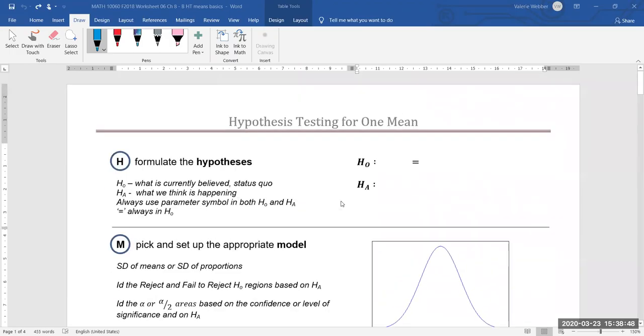So let's highlight a few major important points. When we have one mean we have to remember that our parameter symbol is mu and mu is going to have to show up in each hypothesis. The null is what we currently believe or what we currently accept and the alternative is what we think might be happening.